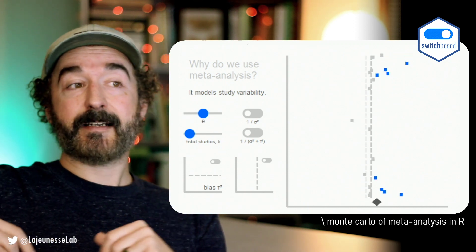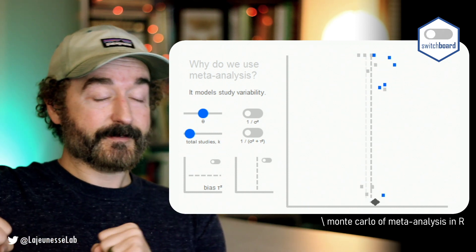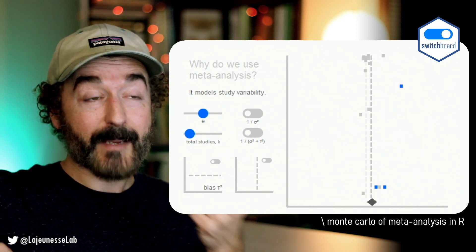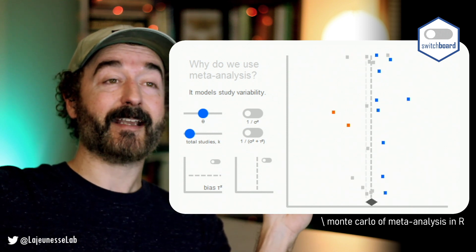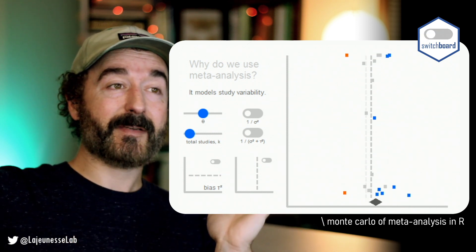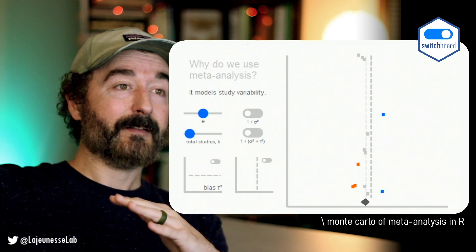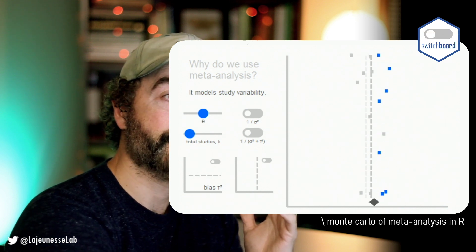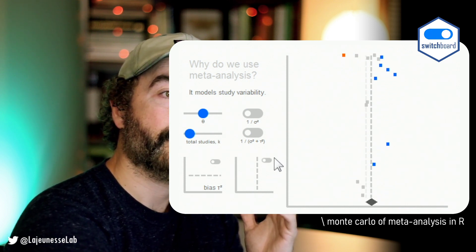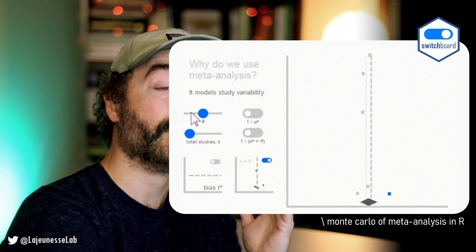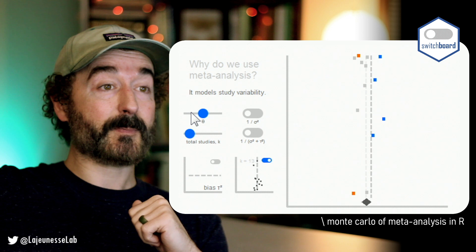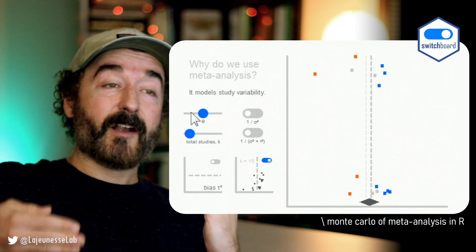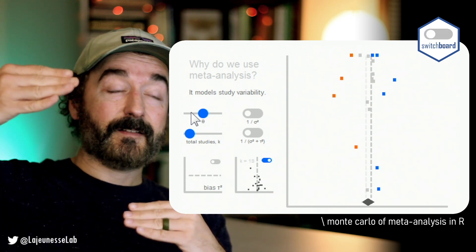The second thing the meta-analyst does is we don't treat all those studies equally. We know sampling error is important — you're seeing right here sampling error in action, a large amount of variability in study outcomes. Let's model that and include it in our analysis. That's what this funnel plot shows. A funnel plot is a way to visualize how studies can vary in sampling error.